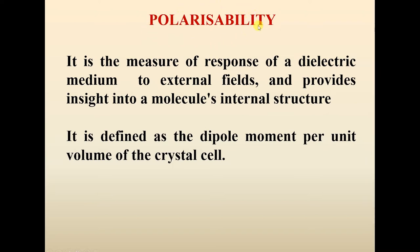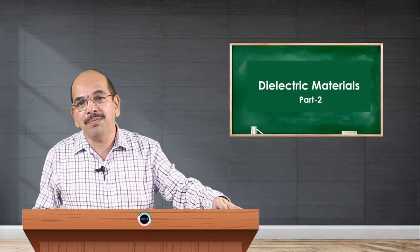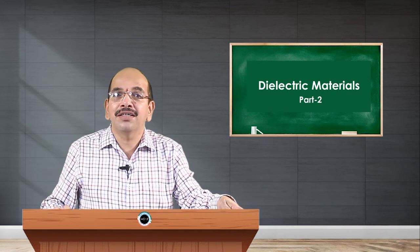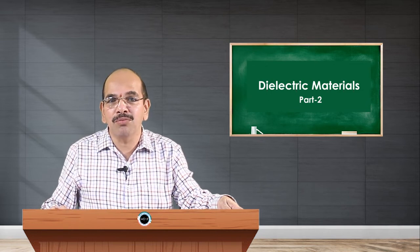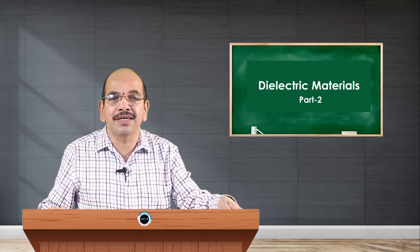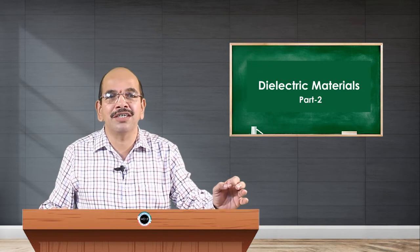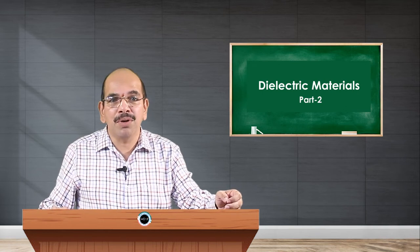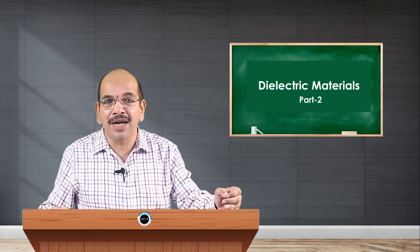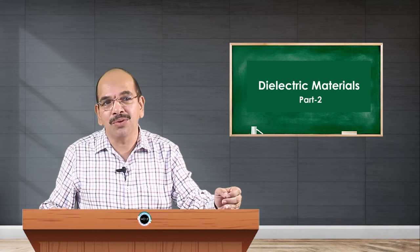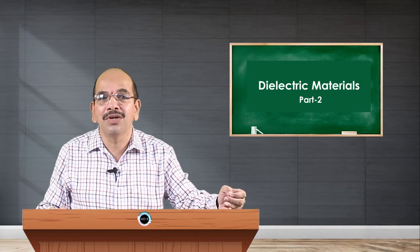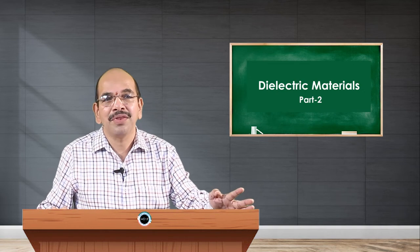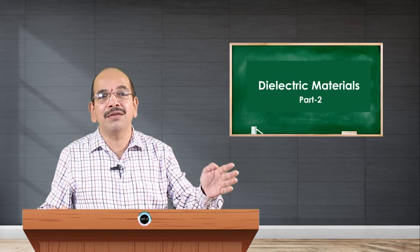Polarizability measures the extent to which a medium gets separated and oriented. In some cases, even if you apply a very large external electric field, the medium cannot be polarized — in such a case, polarizability is zero, meaning the number of dipole moments per unit volume is zero. In other cases, even a very weak external electric field may cause large polarization. This depends on the internal structure of the molecule, which is the insight polarizability provides.